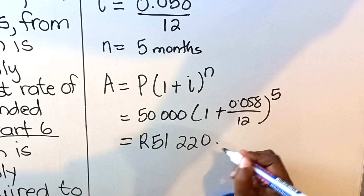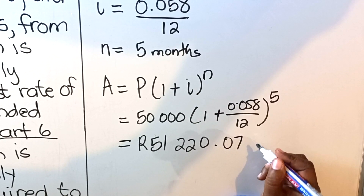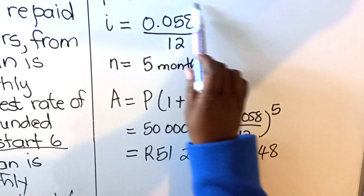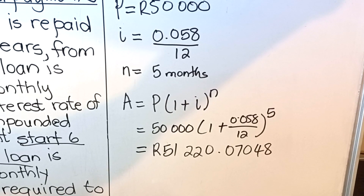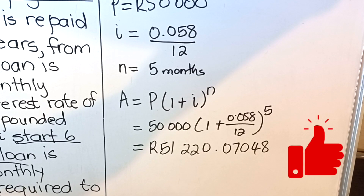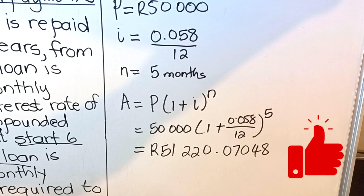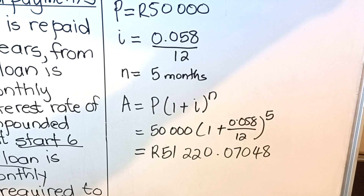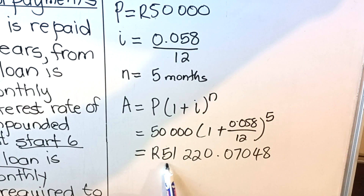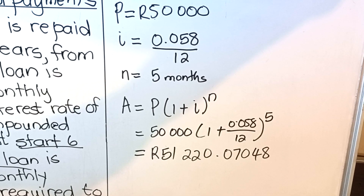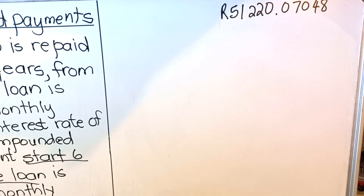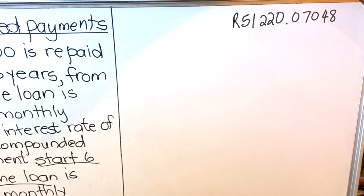Take your calculator and punch all of that in — you get R51,220 (keep as many decimals as possible, because this is not your final answer). This means you took a loan of R50,000 but because you have not paid the loan for five months, when you start paying, the loan will be R51,220. Every month that passes without paying, you are incurring interest. So the equal payments will not be calculated from R50,000 but from R51,220.